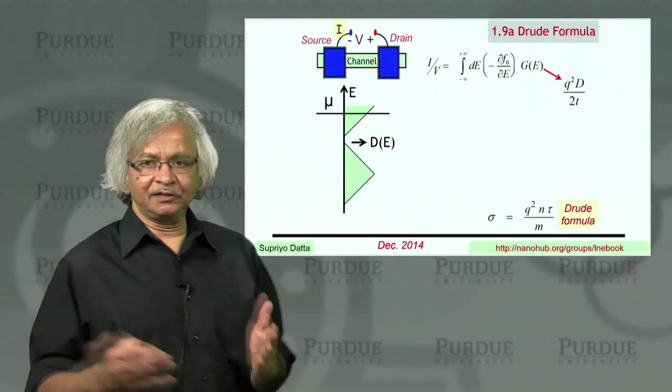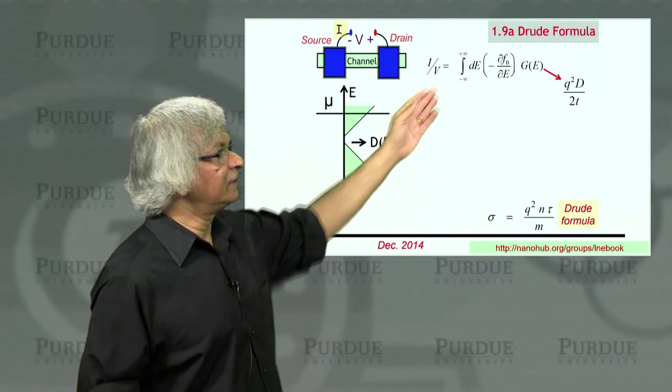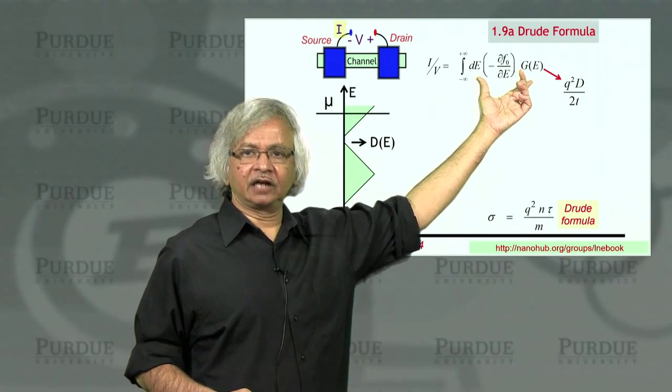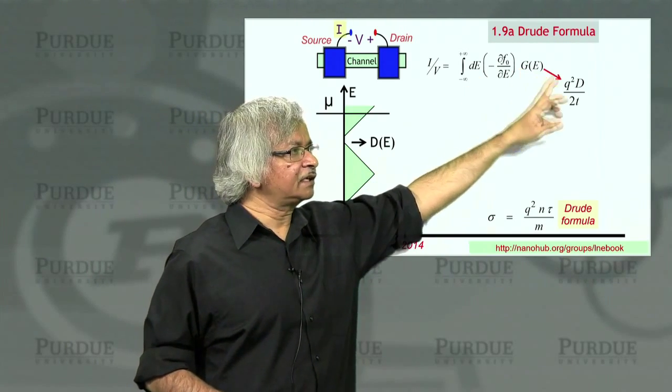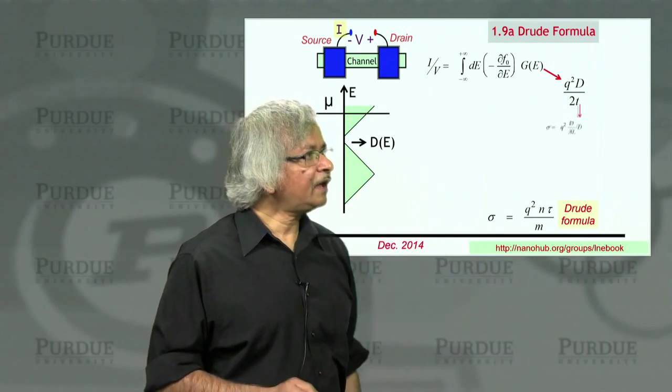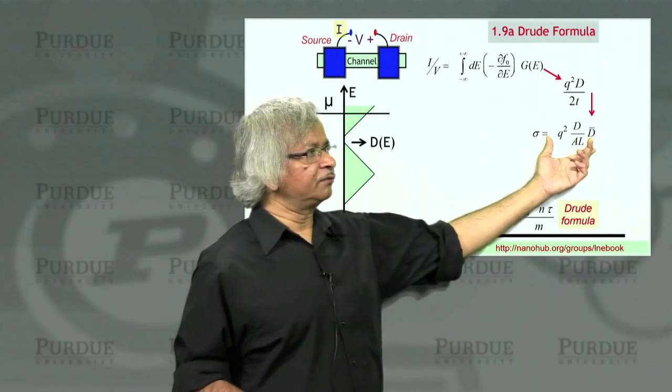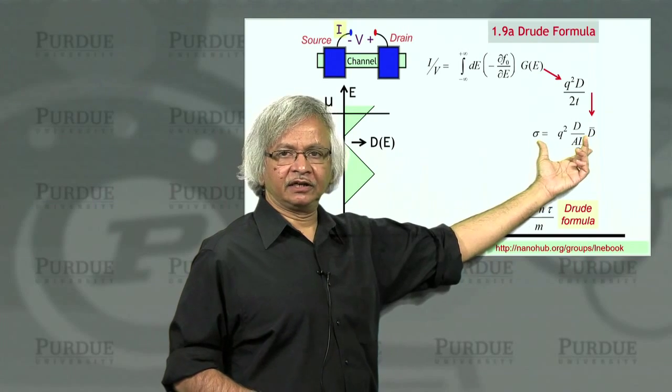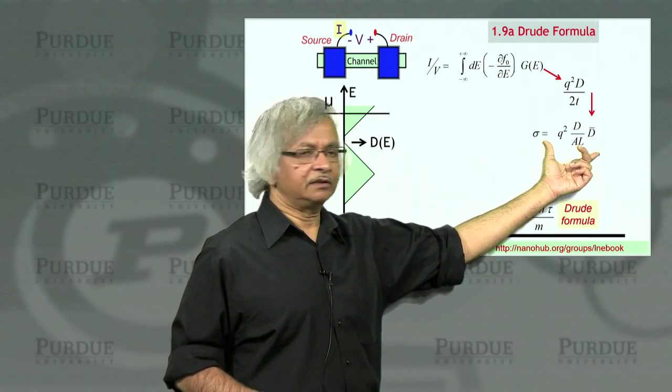Well, the perspective that we have talked about, the conductance is given by this energy average of this conductance function. And the conductance function is given by this q squared d over 2t. And what we saw is that for diffusive transport, this leads to an expression for the conductivity, this that we talked about.